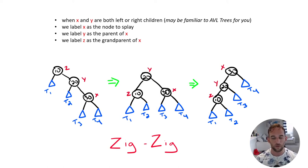So if we want to perform an operation on say node 30, that has a value of 30, we're going to label it x because that's the node that we want to splay. So we're going to perform a splay operation. Its parent, we're going to label y, and then y's parent, we're going to label z or we say the grandparent of x, we're going to label z.